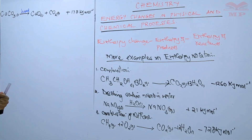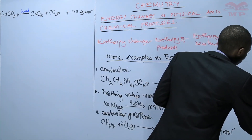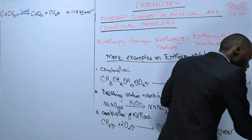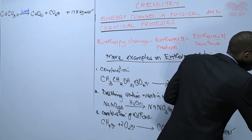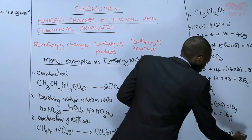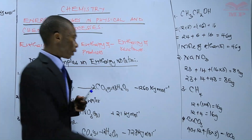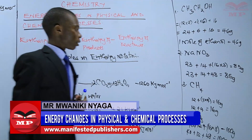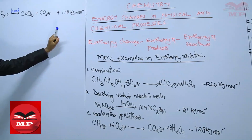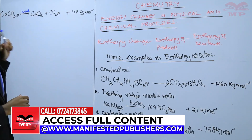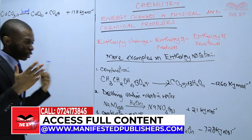The molar mass of calcium carbonate: calcium has mass 40, carbon has mass 12, and oxygen has mass 16 with three atoms giving 48. So 40 + 12 + 48 = 100 grams per mole. Therefore, positive 178 kilojoules per mole will be realized when you heat 100 grams of calcium carbonate.